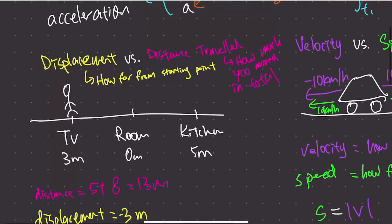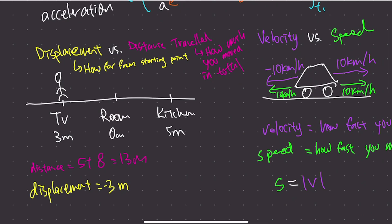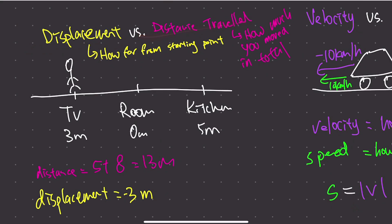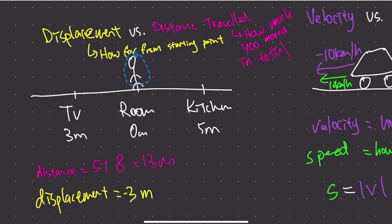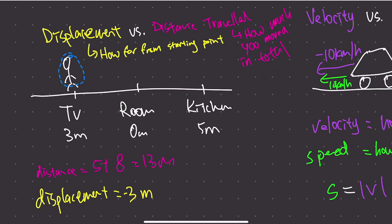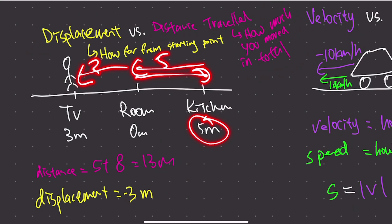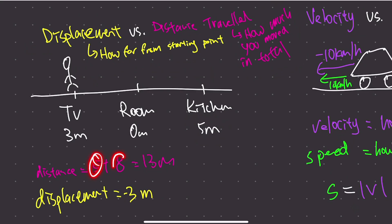There are two main things students get confused with. First: the difference between displacement and distance traveled. Displacement is how far you are from the starting point. Distance traveled is how far you moved in total. For example, imagine you're in your room, you walk five meters right to the kitchen, then eight meters left to the TV. Your total distance traveled is 5 + 8 = 13 meters.